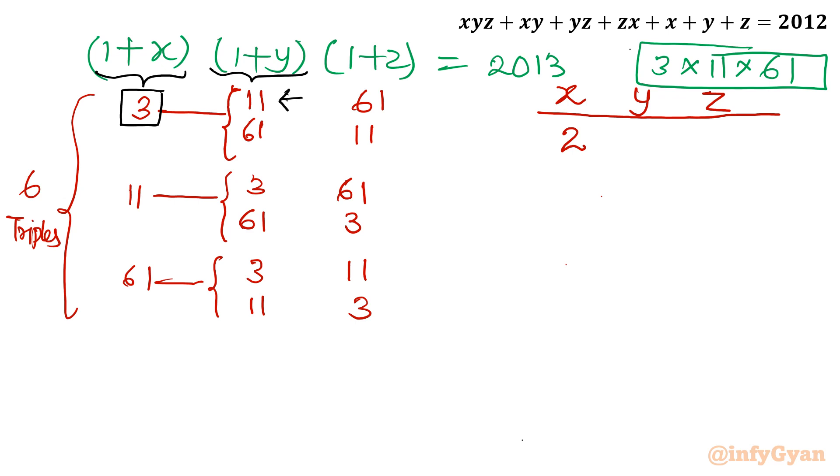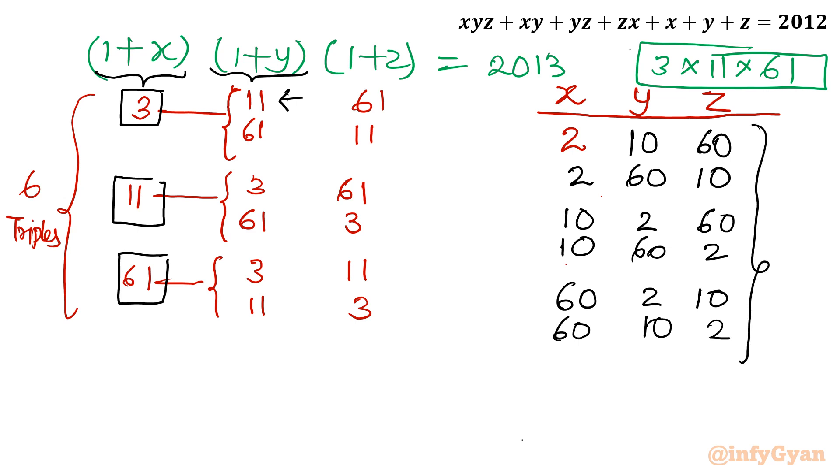1 plus y is 11, then y must be 10. z would be 60. Second set 3, 61, 11. Just decrease the number by 1: 2, 60, 10. Now come to 11. So I will begin with 10 and 10, because 1 plus x is 11, then x would be 10. 3, 1 number less than 3, that is 2: 60, 60, 2. For set of 61, I will consider here 60, 2 sets I will get 2 and 10, 60, 10 and 2. So these are 6 triples possible for which this equation will give us positive integer solution.